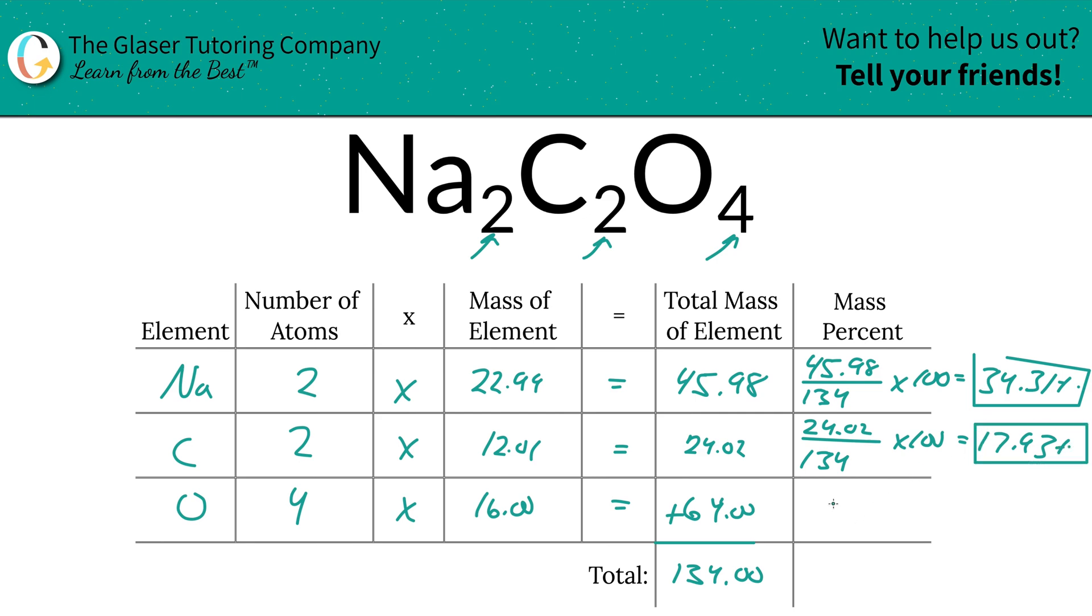And then same thing for our oxygen. So that's 64 over the 134. Multiply that by 100. And we get a percentage here of roughly 47.76%. You don't have to worry about the units at all because the units would always cancel based on this calculation. Whatever units you have on the top will be the same as the bottom. They would cancel. So don't worry about it.